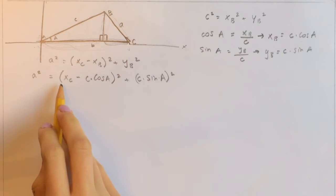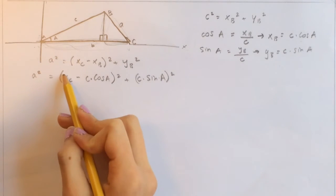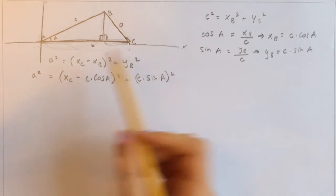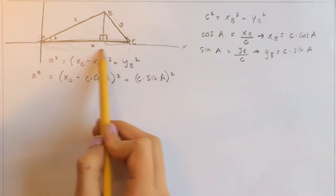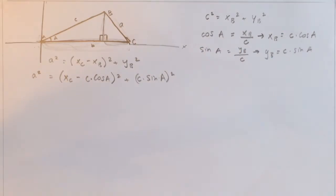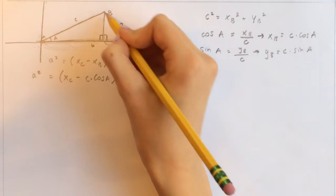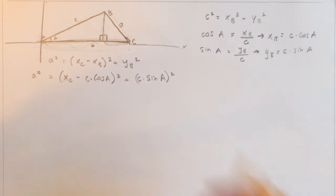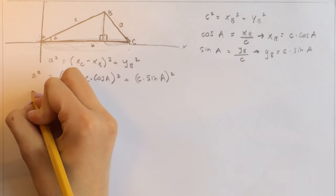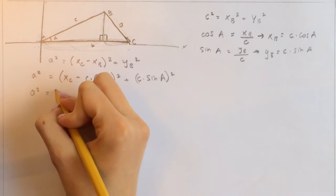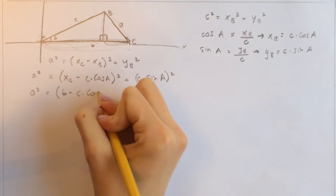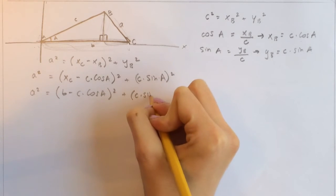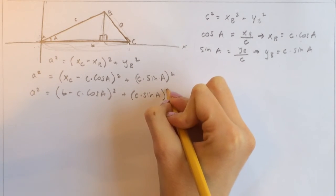Now that we have this, we can look at x of C. X of C is this whole distance, and as we can see, this side is opposite angle B, which makes it side b. So let's substitute x of C with b. That gives us a squared equals the quantity b minus c times cosine of A, all squared, plus the quantity c times sine of A, squared.